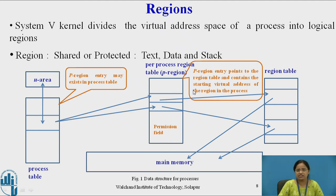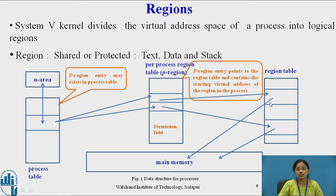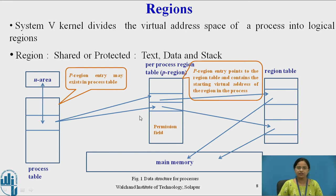Every process has access to its region via the process table, P region, and region table. All these data structures are used by the process when it wishes to access its region — whether it is text, data, or stack. Though the virtual addresses of two processes may be the same, they may differ in physical address; and though the physical address is the same, there may be different virtual addresses.